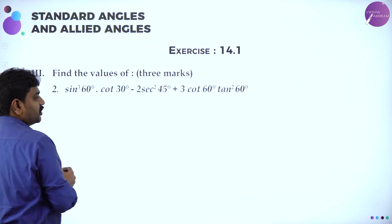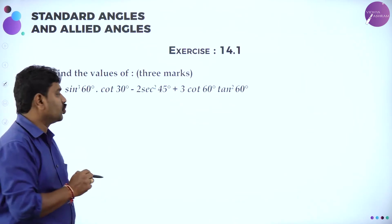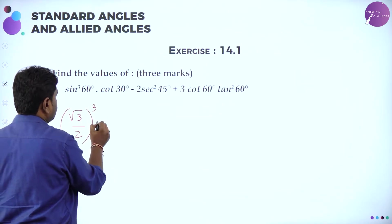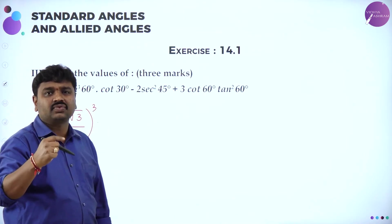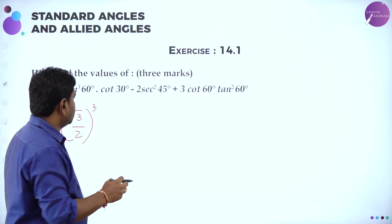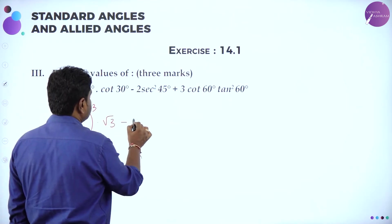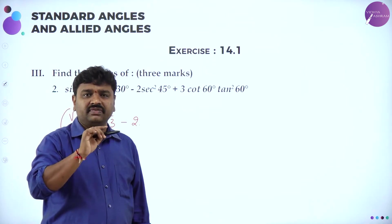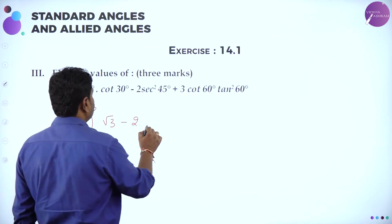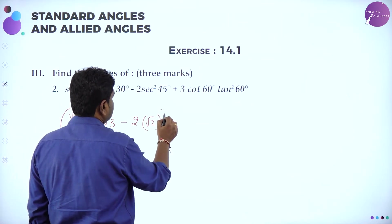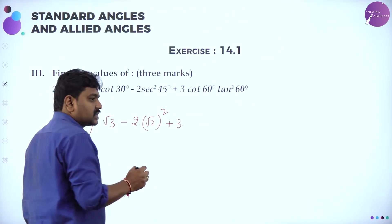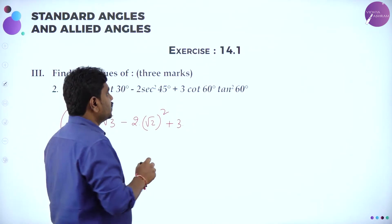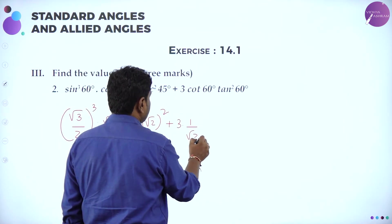Now for problem 2: sin³ 60. What is sin 60? sin 60 = √3/2, so (√3/2)³ into cot 30. Cot 30 is reciprocal of tan 30: tan 30 = 1/√3, so cot 30 = √3. Minus 2 times sec² 45: secant is the reciprocal of cos, cos 45 = 1/√2, so sec 45 = √2.